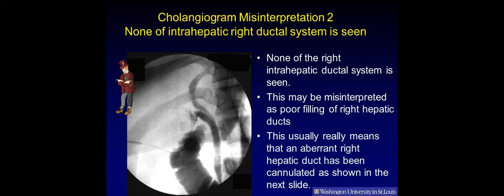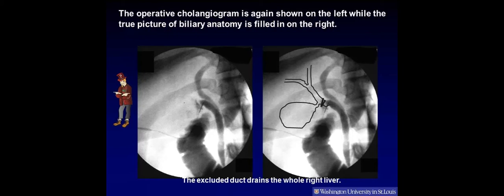Cholangiogram misinterpretation 2: None of the intrahepatic right ductal system is seen. This may be misinterpreted as poor filling of the right hepatic ducts. However, this usually means that an aberrant right hepatic duct has been cannulated. The operative cholangiogram is shown on the left while the true picture of biliary anatomy is filled in on the right. The excluded duct drains the whole right liver.